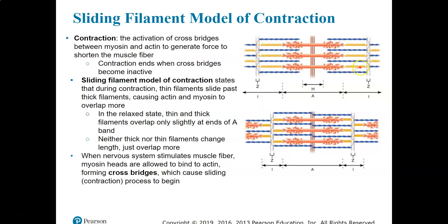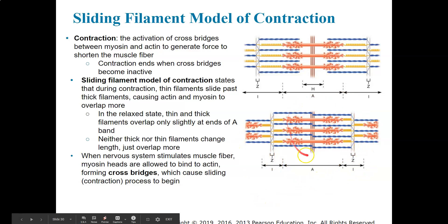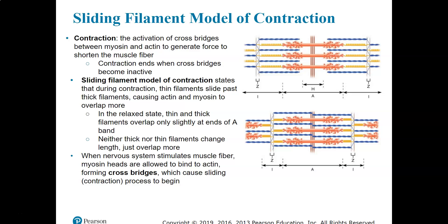Here you can see the distance between the Z-discs has gotten shorter in the contracted state. And that's going to multiply across all of the sarcomeres, across all of the myofibrils, across all of the muscle fibers in a muscle, causing muscle contraction.